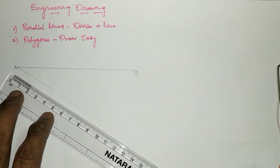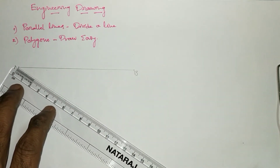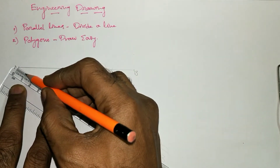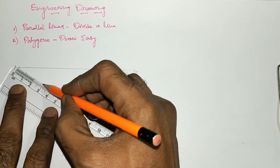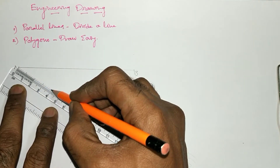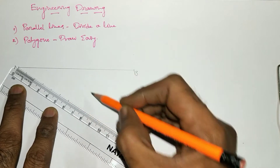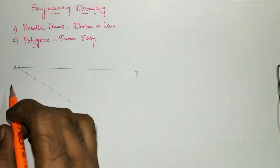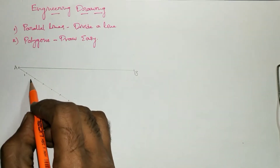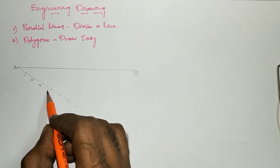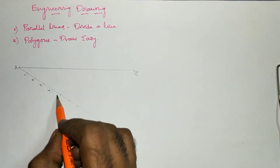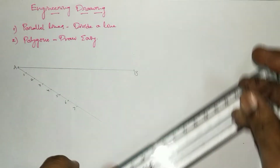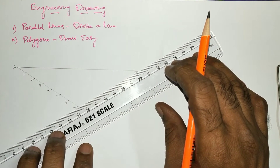You can use the compass to perform this, or with the help of a ruler also you can do that. So mark 1, 2, 3, 4, 5, 6, and 7 on the slanting line. After that, name these points 1, 2, 3, 4, 5, 6, and 7, and join point 7 to the end point of line AB.